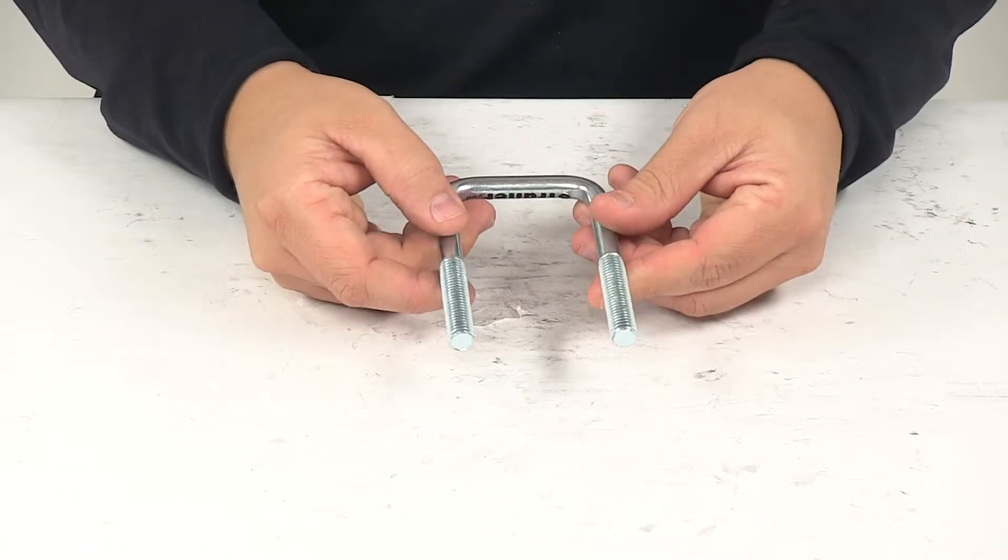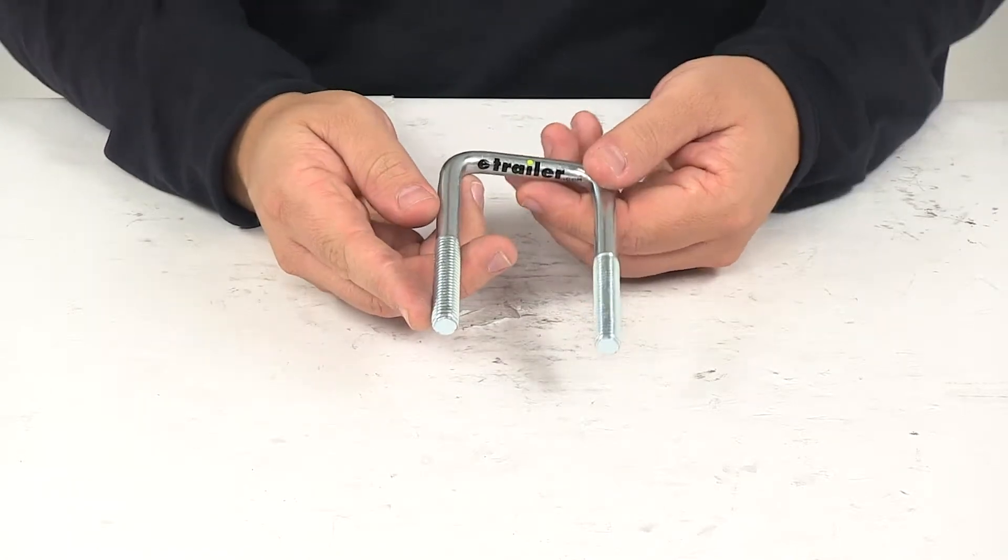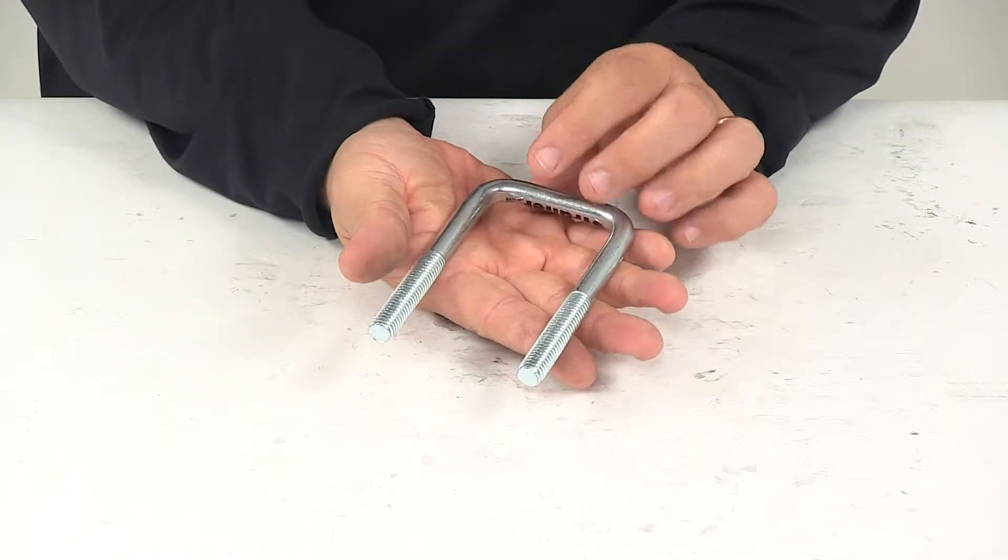This square bolt fits square axle beams. It's zinc plated steel construction, heavy duty and corrosion resistant, so it's great on boat or snowmobile trailers. With this part number you get one U-bolt.